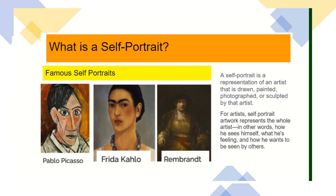Here are a few famous self portraits. We have Pablo Picasso, Frida Kahlo and Rembrandt. You can see that each looks quite different because different artists have different styles. Pablo Picasso's self portrait looks a little bit more like a cartoon, while Frida and Rembrandt look a little bit more realistic. Rembrandt's actually looks almost like a photograph of himself.